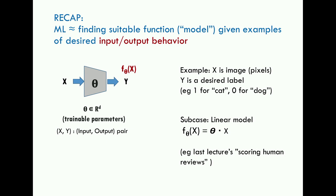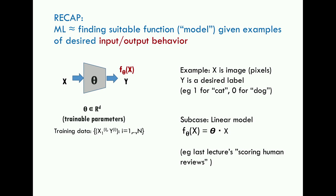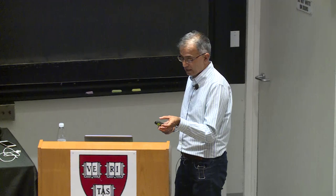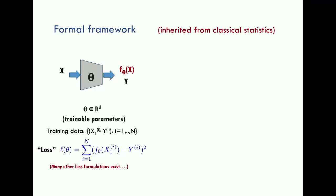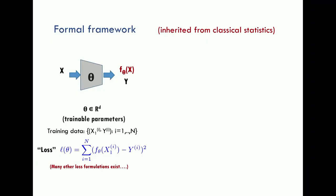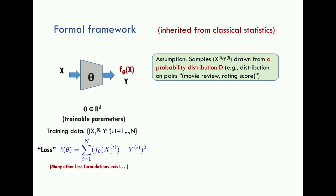Machine learning works by using training data — x_i, y_i pairs — and the loss measures how well the model output f_theta(x) describes the desired output y. The simplest loss function is squared loss, but other losses can be used. The formal framework involves fitting the model to training data and then testing, based on the assumption that there is an underlying distribution from which all x, y pairs are drawn.